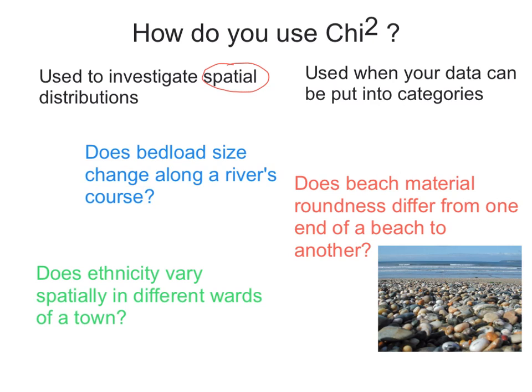And it's also useful when you can put your data that you've collected out in the field into categories. So I've put three examples here of when chi-squared can be used: does bedload size change along a river's course, does beach material roundness differ from one end of a beach to another, and does ethnicity vary spatially in different wards of a town. If you want to statistically prove these to be correct or not, chi-squared can help.